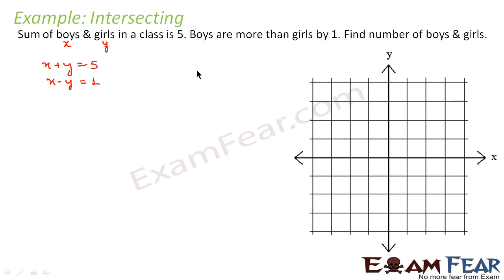Why? Because if boys are more than girls by 1, if you subtract girls from boys you get 1. For example, if boys are 10 and girls are 9, then 10 minus 9 is equal to 1. Similarly, x minus y is equal to 1. Please understand this logic — if you do not understand it, you will not be able to formulate the equations and solve the questions. This is very critical. So equation one is x plus y equals 5, and equation two is x minus y equals 1.